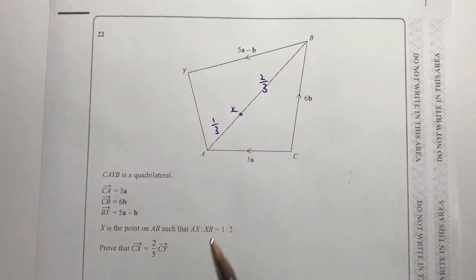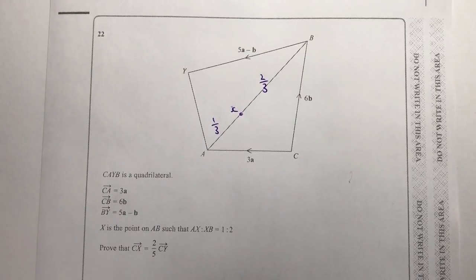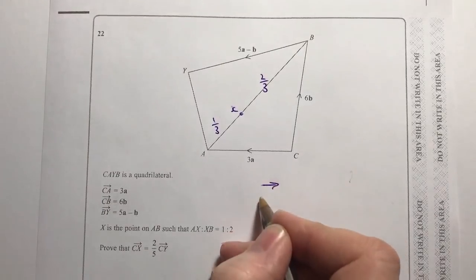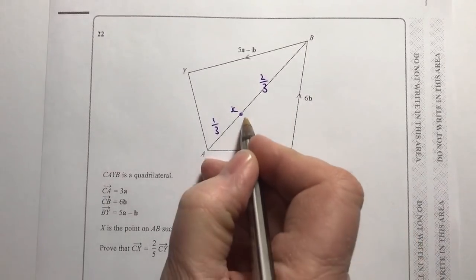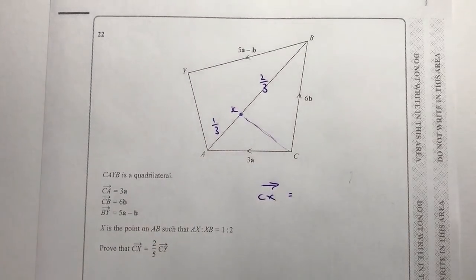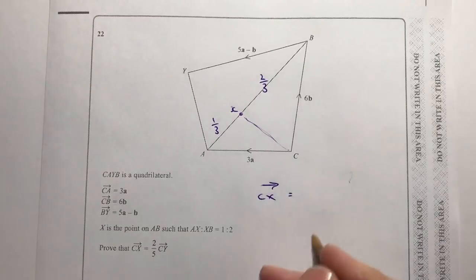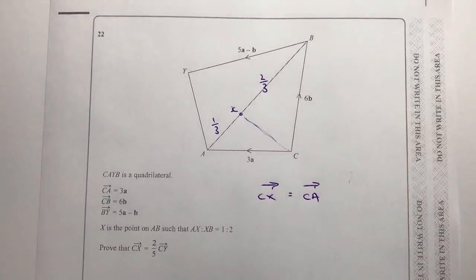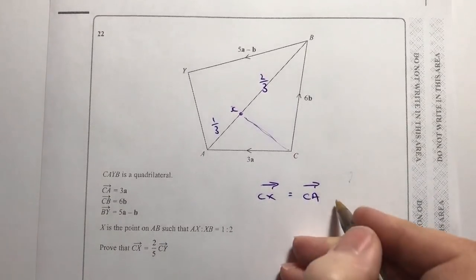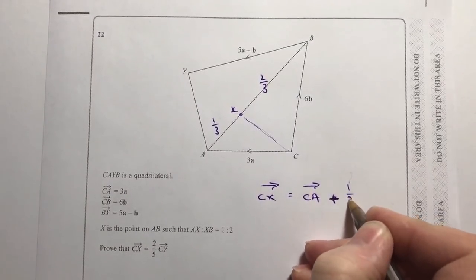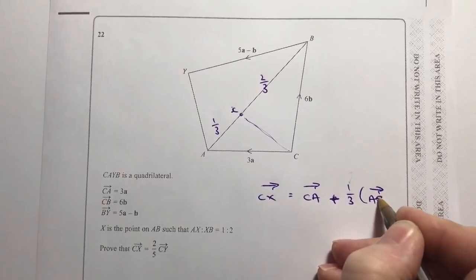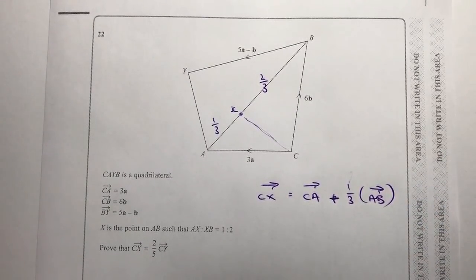So that means X is one third of the way along AB, and two thirds of the way from A to B. Looking at vector CX first, I can go along vector CA — which is 3a — and then add a third of vector AB. We need to work out vector AB first: going from A to C and C to B, so vector AB equals vector AC plus vector CB, which is minus 3a plus 6b, or written more neatly: 6b minus 3a.